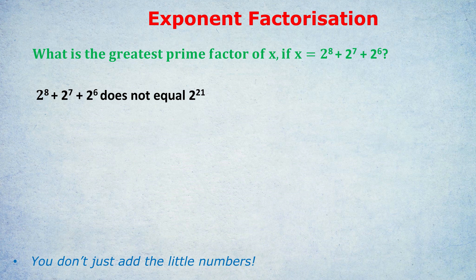So, what do we do? Step one, and you might want to write this down, is we factor out the smallest exponent. So you look at the little powers, see the smallest power, that's 6 in this case. So we're going to factor out 2 to the power of 6.